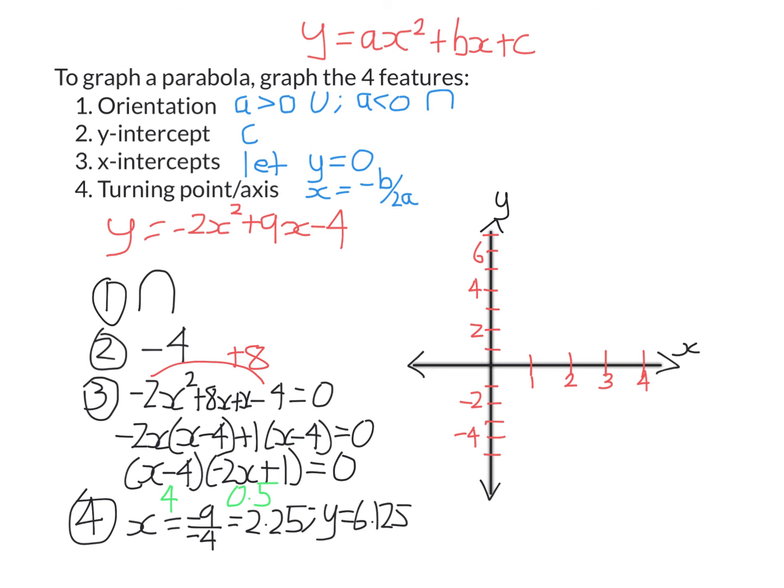Now I've done each of these four things and I'm ready to graph. The y-intercept is at negative 4. The x-intercepts are at positive 4 and positive 0.5. The turning point is at x equals 2.25, y equals 6.125.